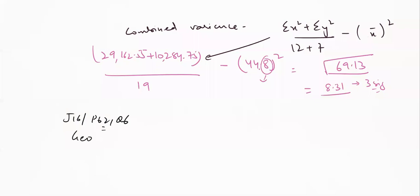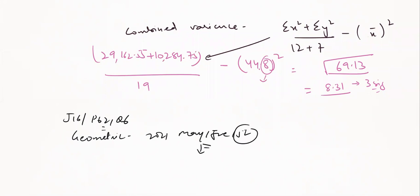For geometric distribution, I have solved the 2021 May/June paper 52 — you can check that video. In this attempt, the geometric question was one complete separate question. It has not been coming as a separate question for the past few attempts, but this time it was, so attempt that one for geometric.